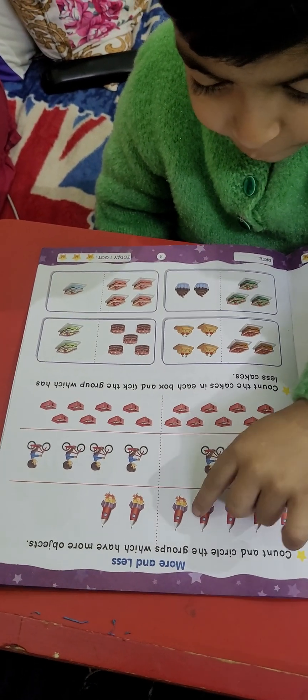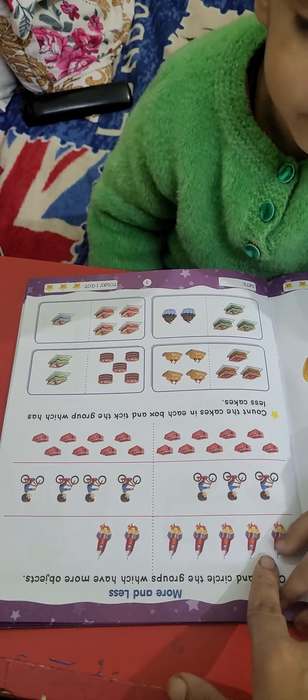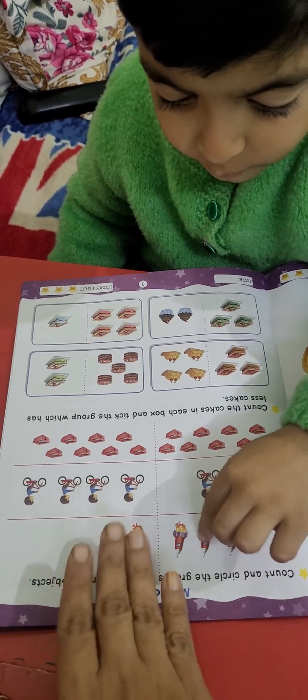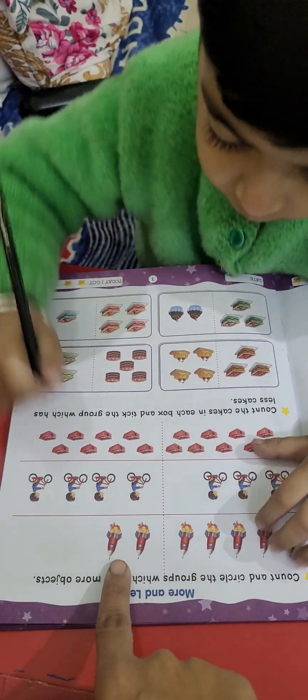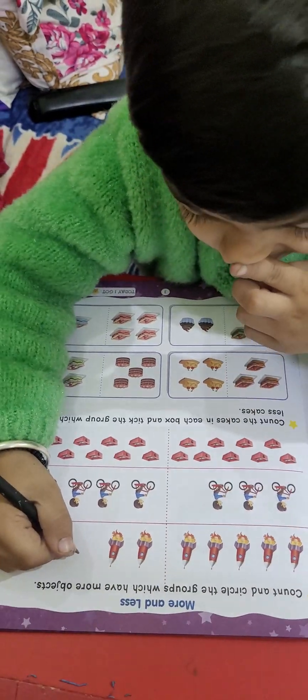1, 2, 3, 4, 5, 6, 7. No. Count. Count again. 1, 2, 3, 4, 5. Till here you have to count. Now, count this one. 1, 2. Which one is less? Which one is more?